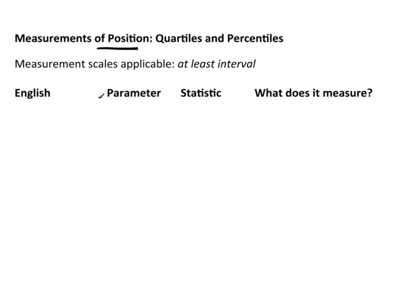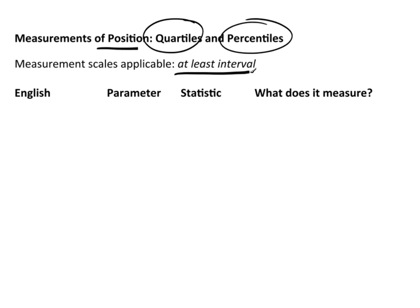The most common measurements of position are quartiles and percentiles, and actually quartiles are nothing more than special percentiles. The measurement scale applicable is at least interval — that means either interval or ratio.